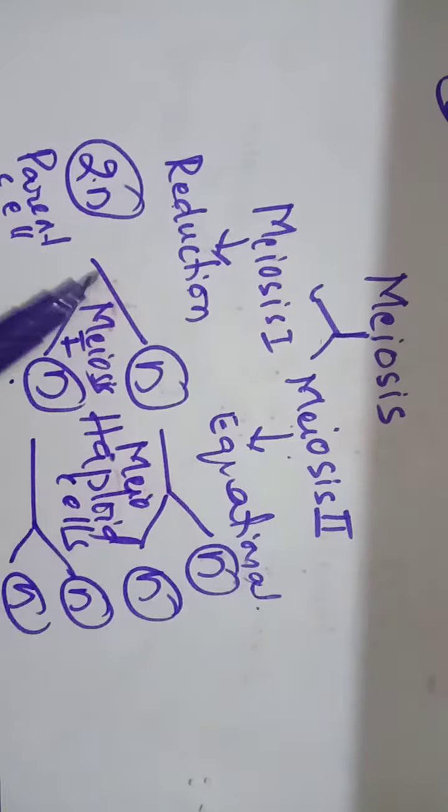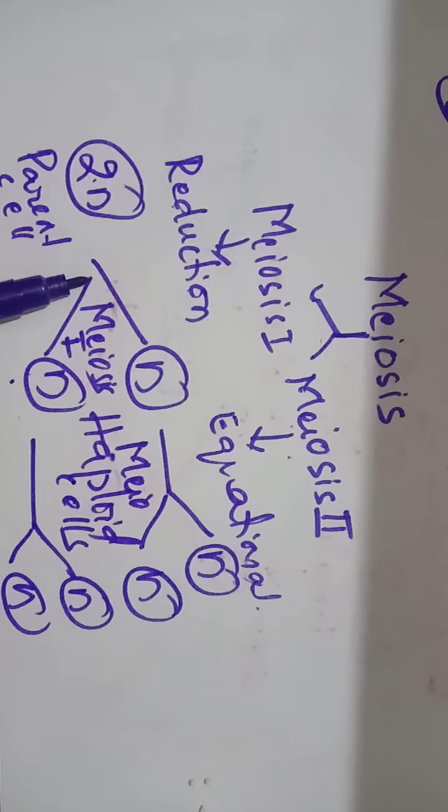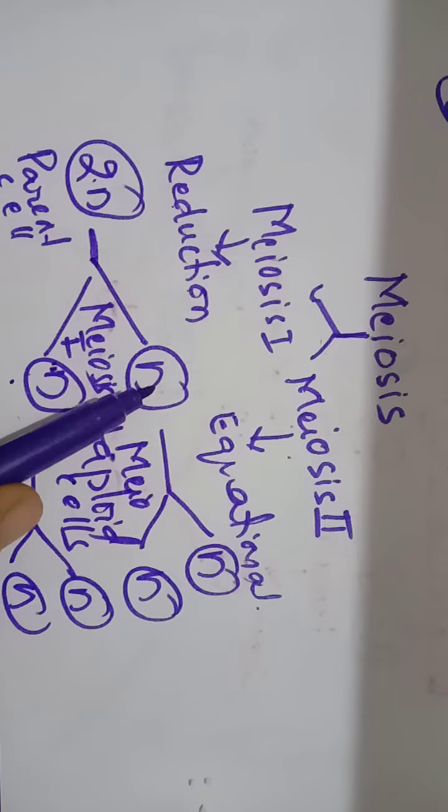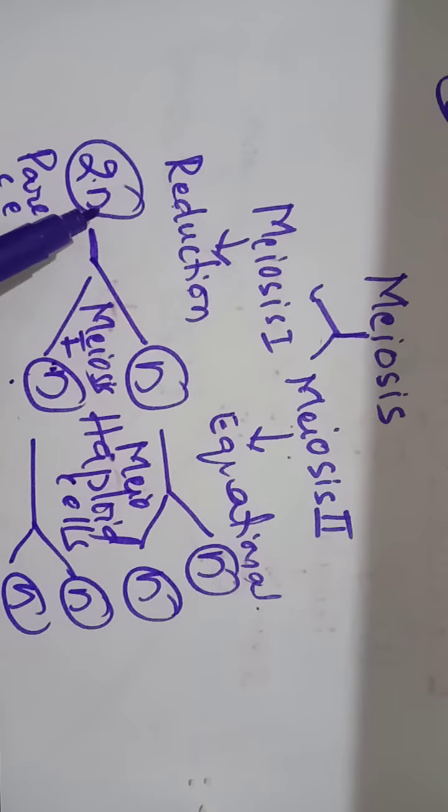If you have a parent cell and the parent cell contains 2n number of chromosomes, in meiosis 1, this parent cell gives rise to two daughter cells, and these two daughter cells carry haploid number of chromosomes. See, the number of chromosomes is reduced over here.